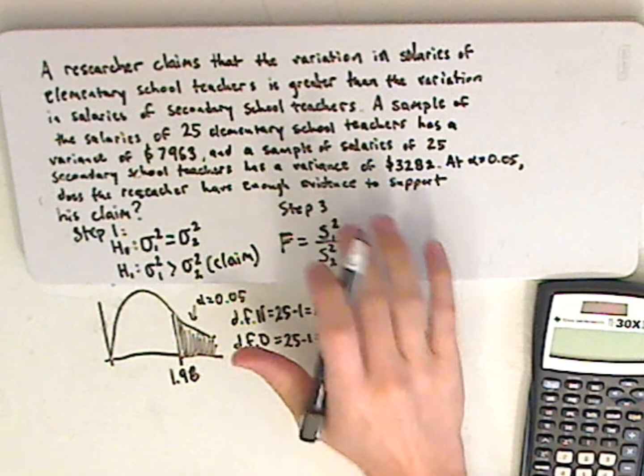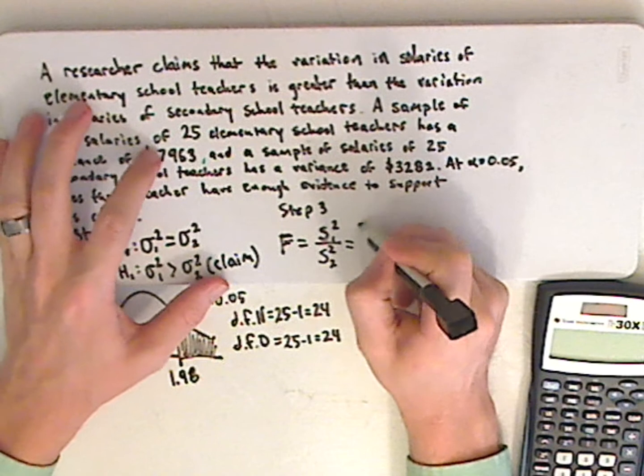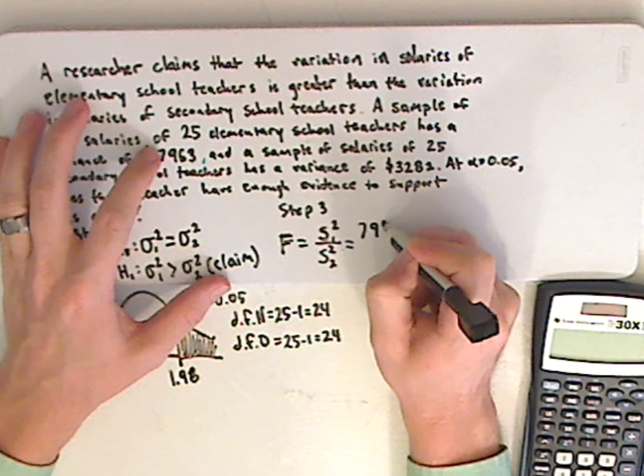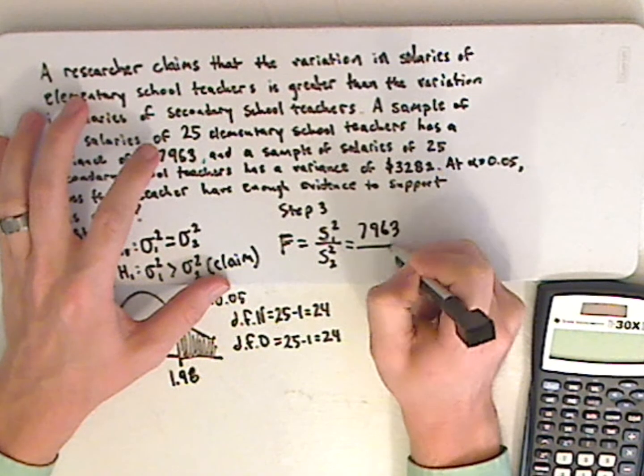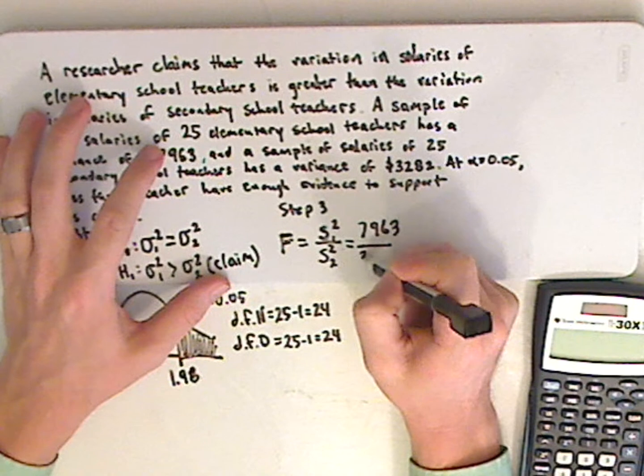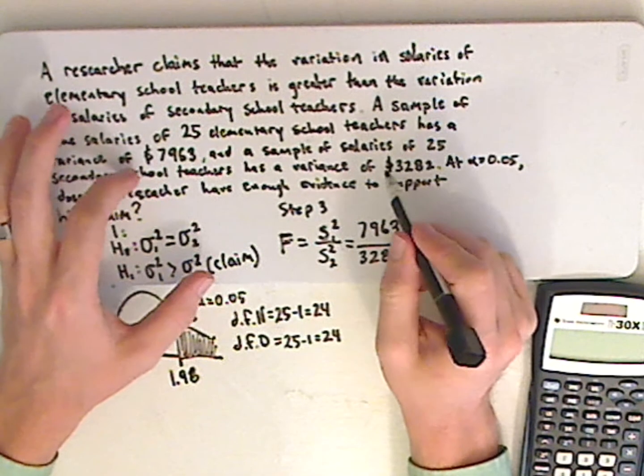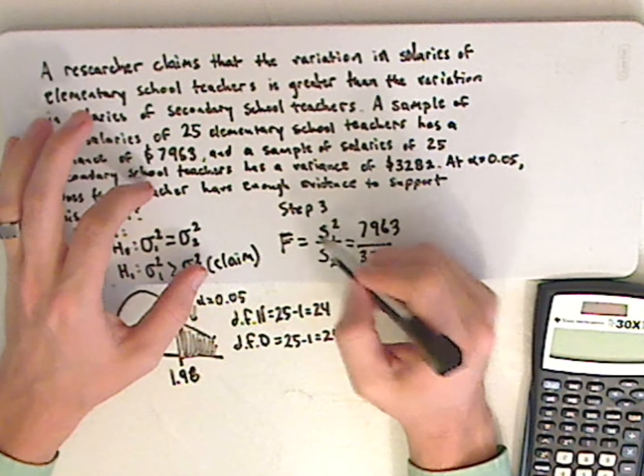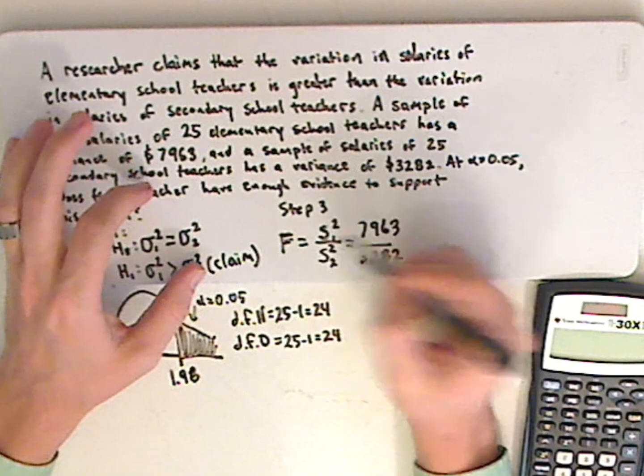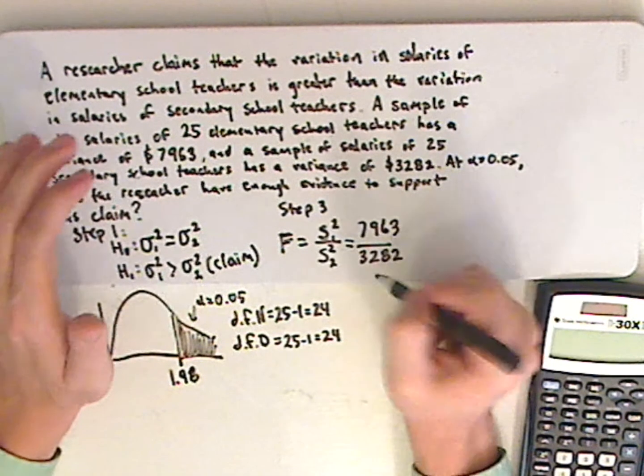Now plug these in, so you have 7,963 over 3,282. Since both of these are variances, it's already S squared. So I don't have to square them, I just plug them in.